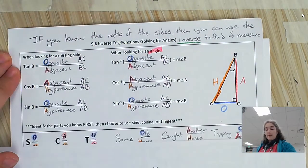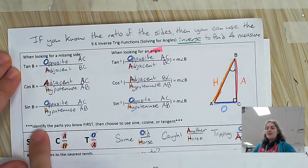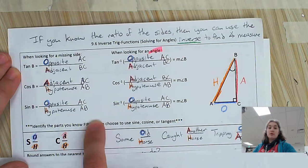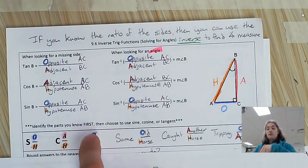So with our example right here... Oh yeah, identify the parts you know first, then choose one. Identify what you know first, just like we have been, right? Identify what you know, then choose one.